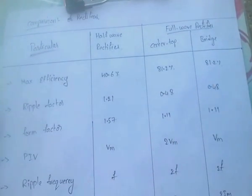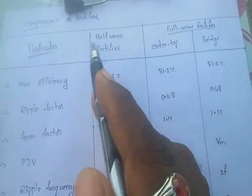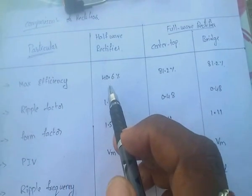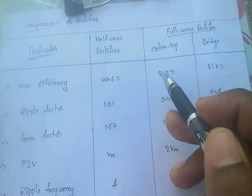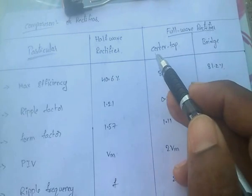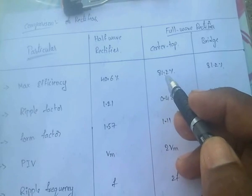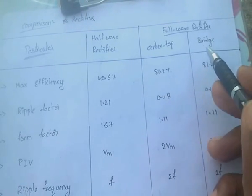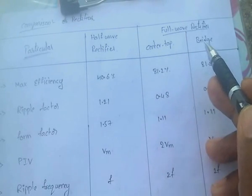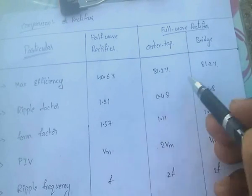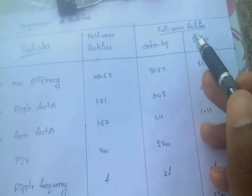For maximum efficiency: if we use a half wave rectifier, the maximum efficiency is 40.6%. If we use a full wave rectifier with center tap, the maximum efficiency is 81.2%. For bridge rectifier it is also 81.2% — both center tap and bridge rectifier have the same maximum efficiency.